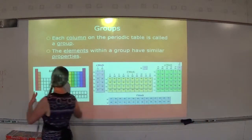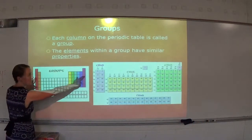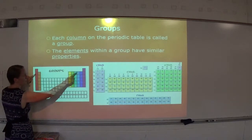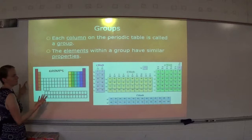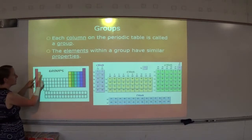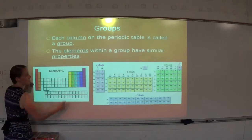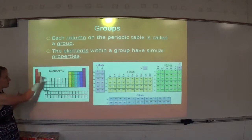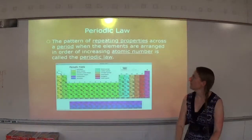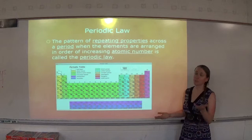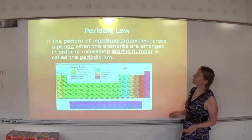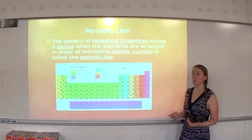Do elements in the same period or row have similar properties? No. But there is a repetition of properties. As we go across the colors — red, orange, yellow, green, blue, purple — and then again on the next row we see red, orange, yellow, green, blue, purple, like that. So you have a repetition of properties every time you start a new row. The pattern of repeating properties across a period when the elements are arranged in order of increasing atomic number is called periodic law.